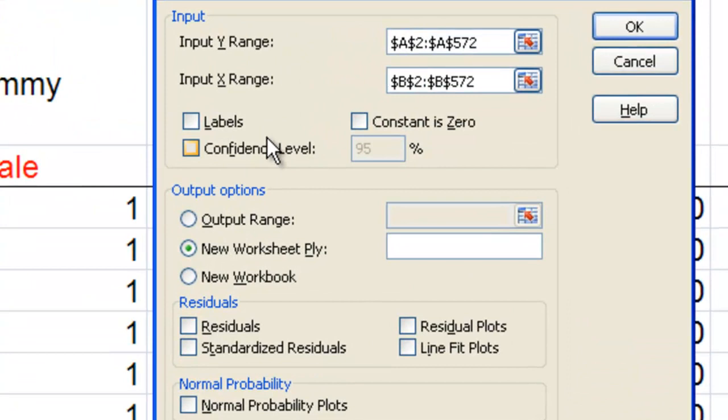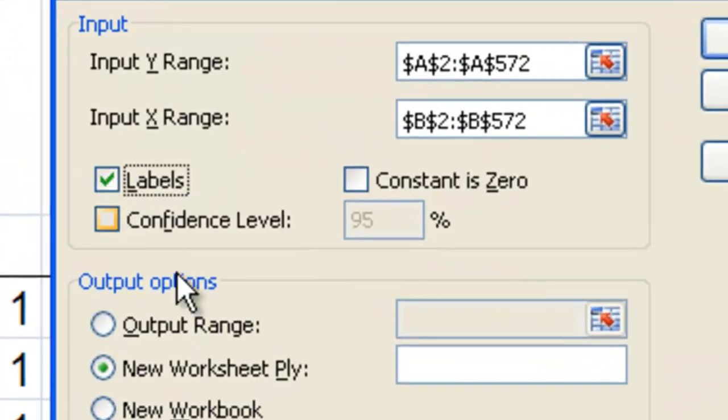Now go back to the regression dialog box. I'm going to check labels because I did select the variable names as part of the selection.